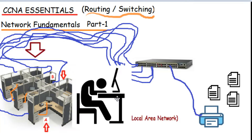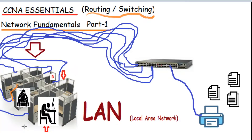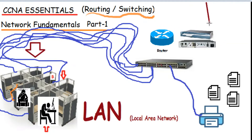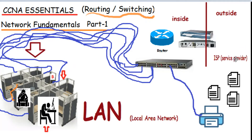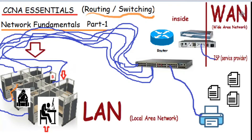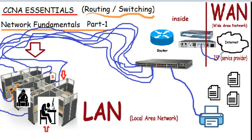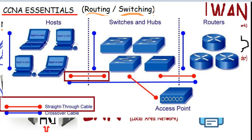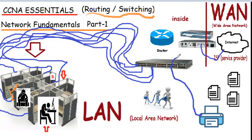Sooner rather than later, these PCs will get bored of each other and say they need to communicate outside their local network. The IT people got a router to solve the problem, because a router is what marks the border of a LAN and allows outside connections to another network. After intense negotiation between the IT people and the service provider, the router connected to a wide area network called the internet. The cable people knew they had to use straight-through cables between the PCs and the switch, and between the router and the switch. So they did that and went home.